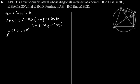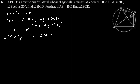Now, angle BAD is equal to angle BAC plus angle CAD. Angle BAC is 30 degrees plus angle CAD is 70 degrees, which gives angle BAD is equal to 80 degrees.